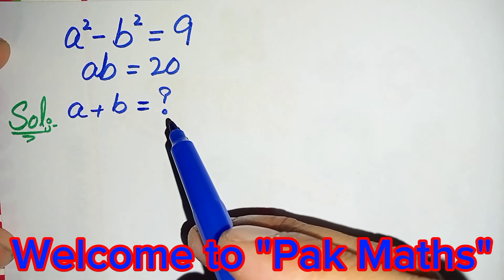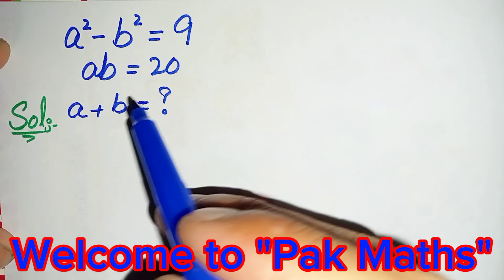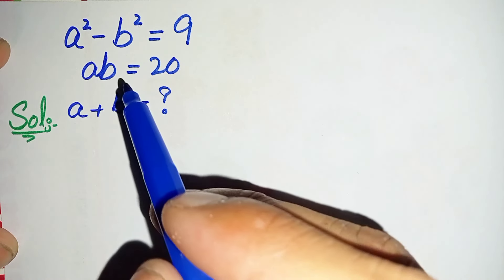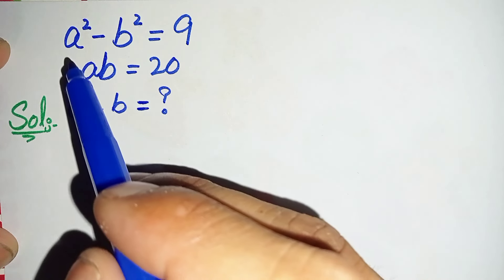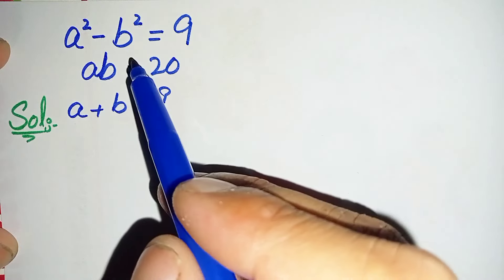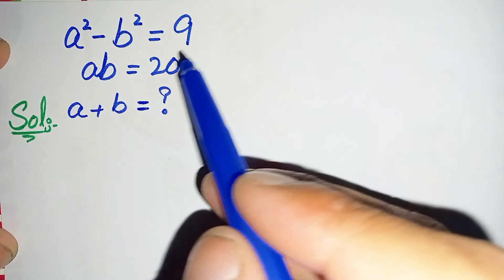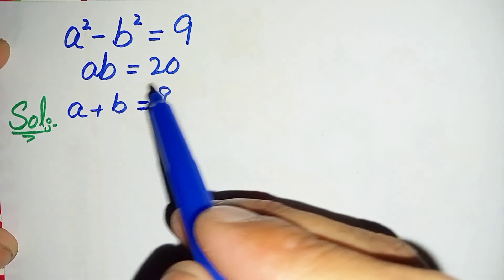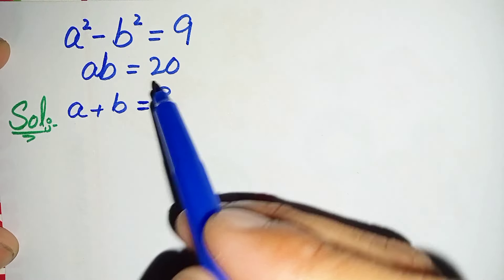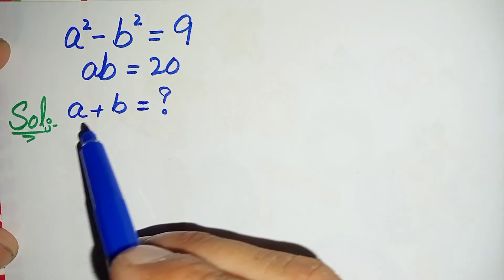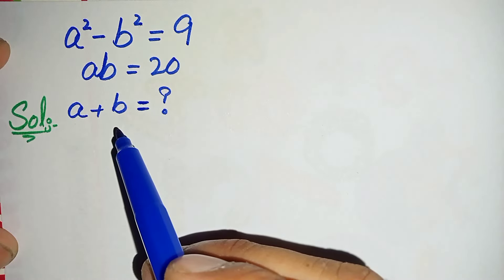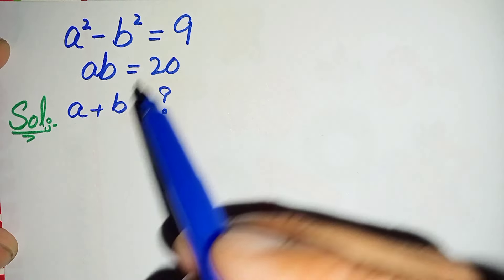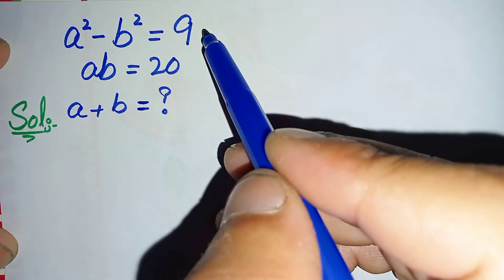Hello, you are welcome. How to solve this nice Olympic algebra math problem: a² - b² is equal to 9, and ab is equal to 20. Here we will try to find the value of a + b.